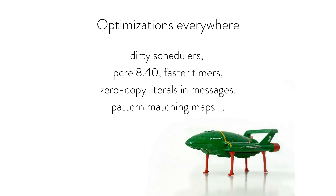We looked extensively at the improvements in pattern matching of maps in episode two — go check that out if you haven't seen it already. As a spoiler, there is anywhere from a 15% to 30% improvement on pattern matching of maps, depending on whether you're doing it directly or using function headers. That's really, really impressive.